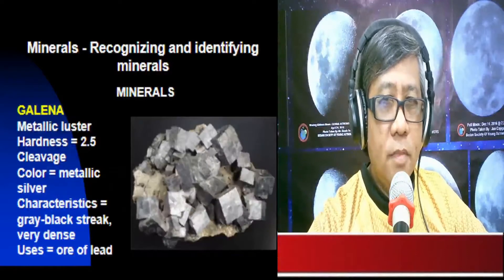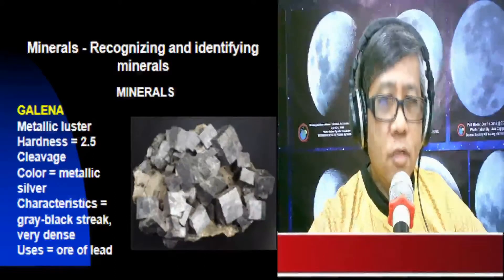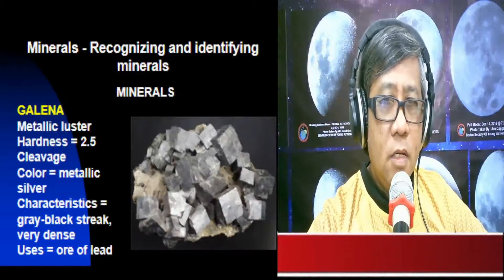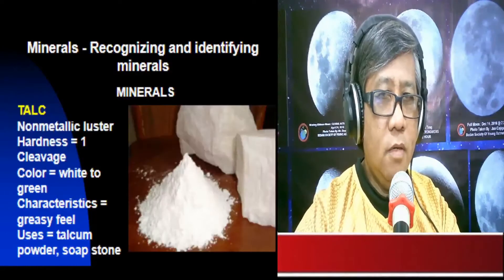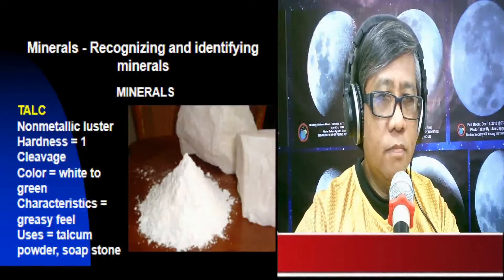Galena exhibits metallic luster with a hardness of 2.5, and also exhibits cleavage. Its color is metallic silver, it has a gray-black streak, is dense, and is used as an ore of lead. Talc exhibits non-metallic luster, has a hardness of 1 — the softest of all minerals — and exhibits cleavage. Its color is white to green, it has a greasy feel, and is used in making talcum powder and soapstone.